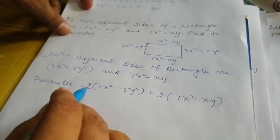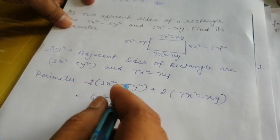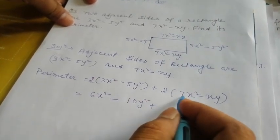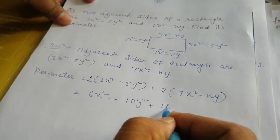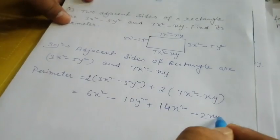So we will do it like this way. Now multiply: 2 × 3x² = 6x², minus 2 × 5y² = 10y², plus 2 × 7x² = 14x², minus 2xy.